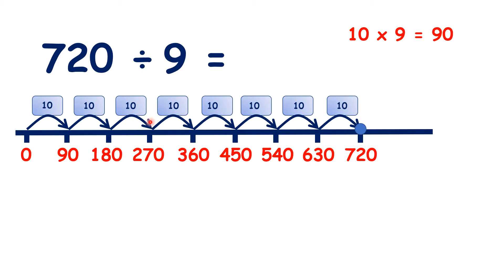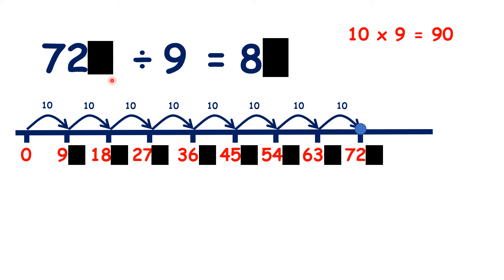So because we counted 8 steps of 10 times 9, our answer must be 80. But we don't really need to use a number line, because if we know that 72 divided by 9 is 8, we know that 720 divided by 9 is 80.